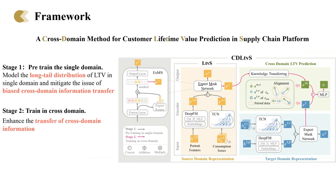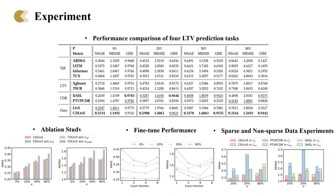Now let's introduce our framework, CDLEVS, a cross-domain method for customer lifetime value prediction in supply chain platforms. This framework involves a two-stage training process. Initially, we pre-train the single domain to obtain source domain and target domain representations. We have designed a specialized module called the Expert Mask Network to model the long-tail distribution of LTV in single domain and mitigate the issue of biased cross-domain information transfer. In the second stage, we conduct cross-domain training to enhance cross-domain knowledge transfer for both sparse and non-sparse data through a various-level alignment mechanism. Our experiments on a real-world dataset comprising 5,000 customers from JD.com have demonstrated the superiority of our method over other state-of-the-art methods.